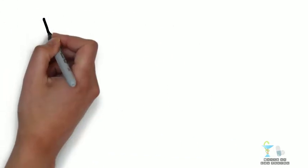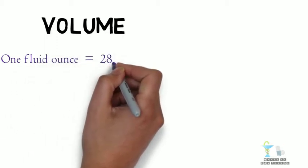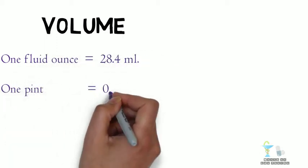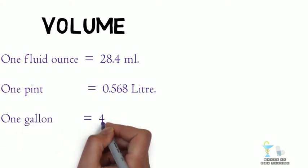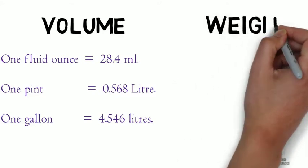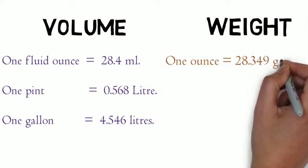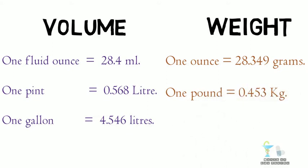Now let us see some basic conversions between these two systems. In the volume category, one fluid ounce equals 28.4 milliliters. One pint is equal to 0.568 liter. One gallon is 4.546 liters. Moving on to the weight category, one ounce is equal to 28.349 grams, one pound is equal to 0.453 kg, and so on.